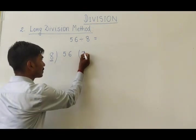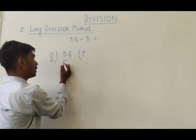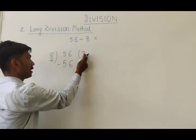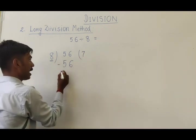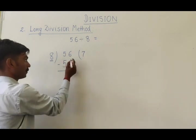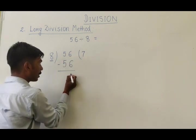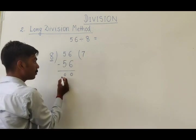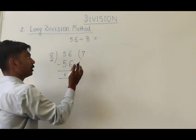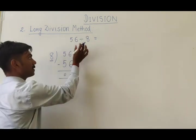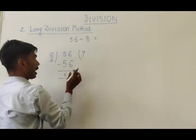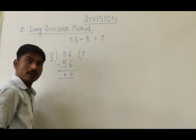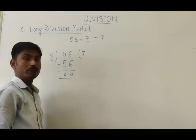So 8×7 times will give us 56 which is equal to this. Then we will write this 7 here and 56 here. Now we will subtract here. After subtracting, 6 minus 6 is 0, 5 minus 5 is 0. So we have got nothing, 0 as remainder. So this 56 is completely divisible by 8 and the answer is 7. Here you should also know some of the terms.